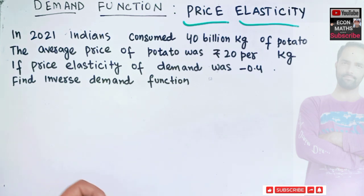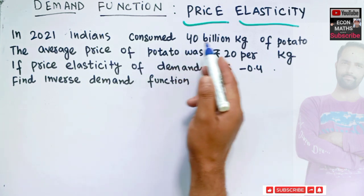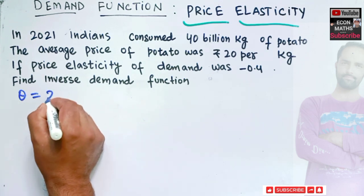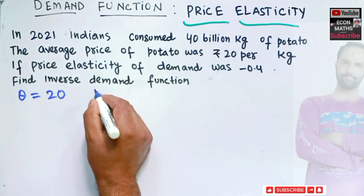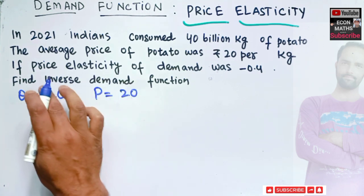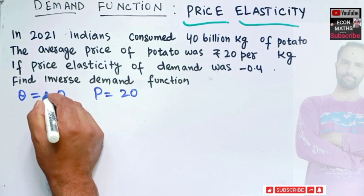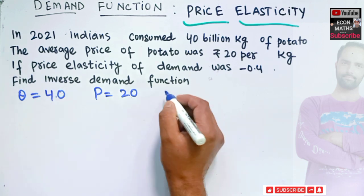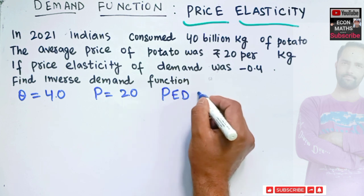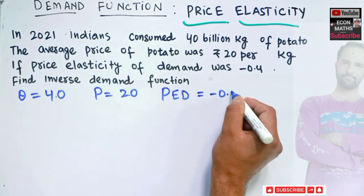So how do we solve this question? What we are being given here, let us write it. We are being told, total quantity Q is equal to 20 billion, and price is being given as 20. Sorry, quantity is 40 billion here. And we are being given the price elasticity of demand equal to minus 0.4.